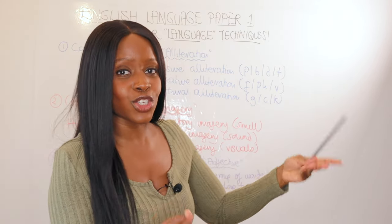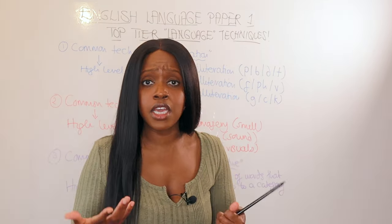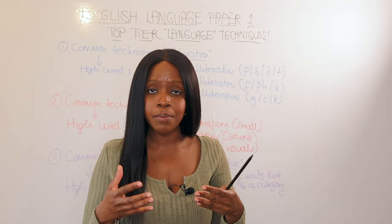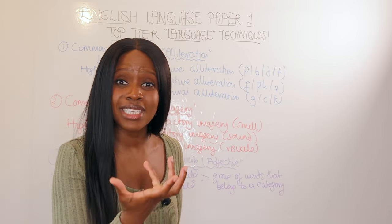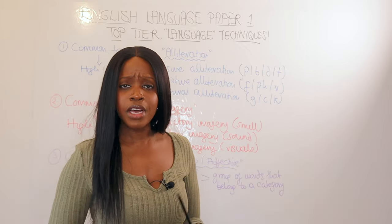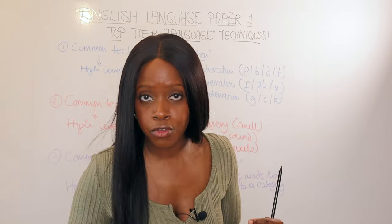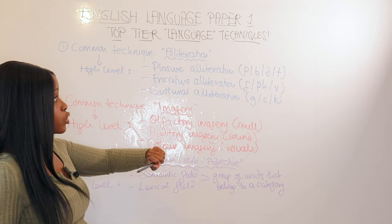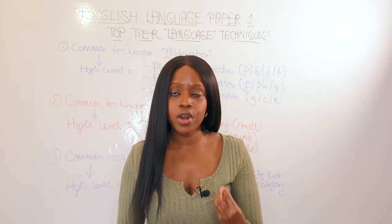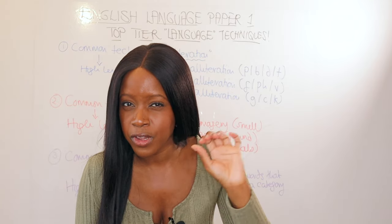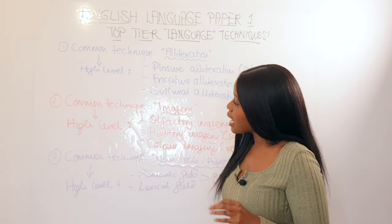Remember also that the final form of alliteration is sibilance — the S starting sounds — which is very different from the other forms. When practicing past paper questions, try to use one of these more specific alliterative terms: plosive, fricative, or guttural alliteration. This will impress your teachers and elevate your analysis. So instead of just saying alliteration, be more precise — that's the first common language technique taken up one notch.